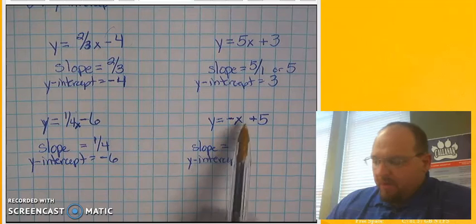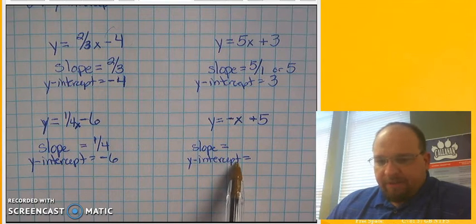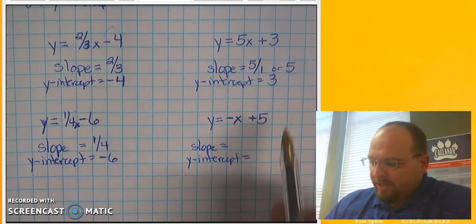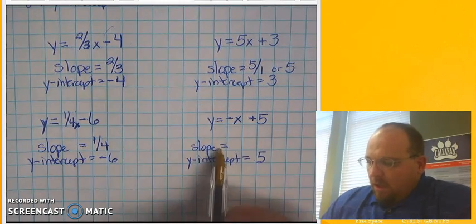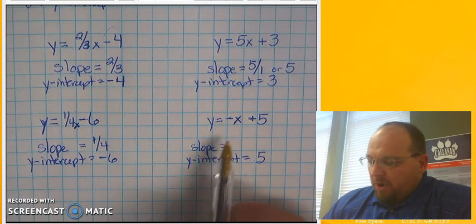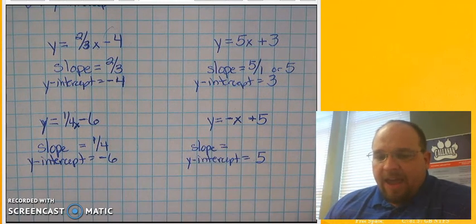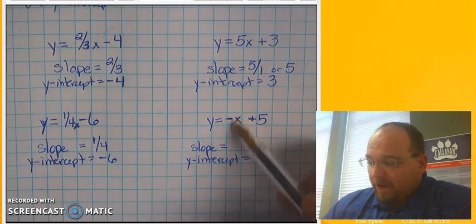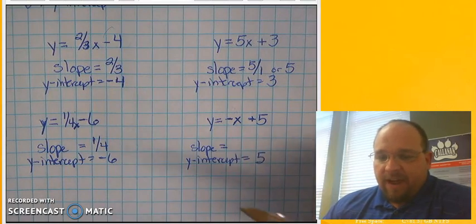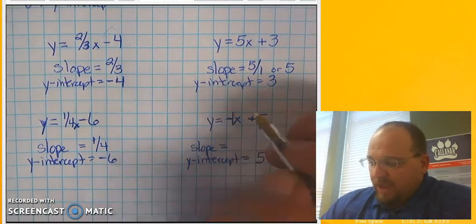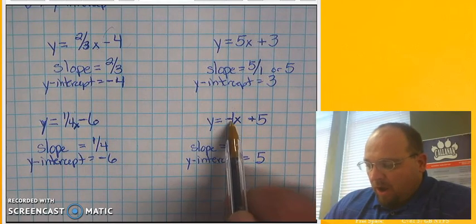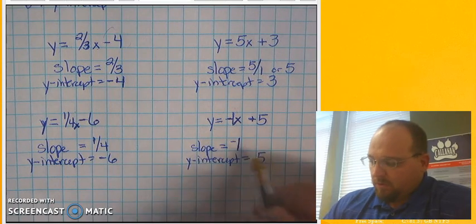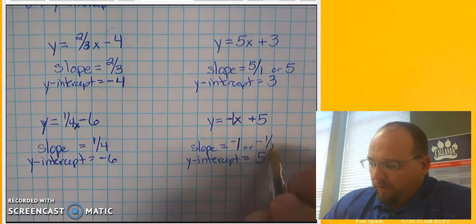We're going to come back to the slope in this problem. Let's do the y intercept first. Again, I notice that this is a positive, so therefore it's going to be a positive number down here. And it's going to be a positive 5. The slope in this one, you'll notice there is no number in front of the x. So I have to assume, or I have to use my knowledge of what I know, what number can I place in front of x that doesn't change the value of x, and that is 1. As a result, since I can put a 1 there, the slope in this one is really negative 1. Or you might see it as negative 1/1.